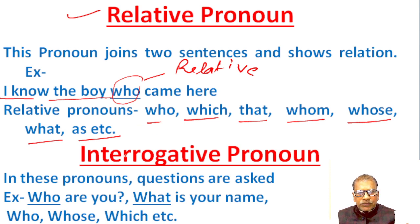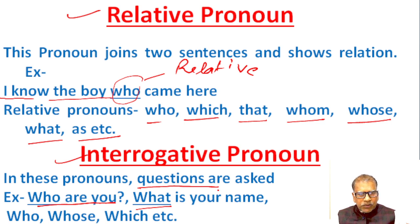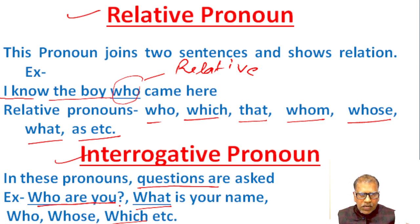Interrogative pronouns. In interrogative pronouns, questions are asked. For example, 'Who are you?' — in this sentence, 'who' is an interrogative pronoun. 'What is your name?' — in this sentence, 'what' is an interrogative pronoun. Who, whose, which — these are interrogative pronouns, and with the help of these pronouns, questions are asked.